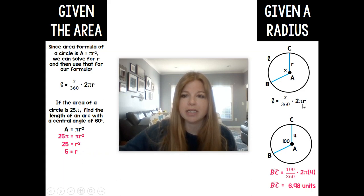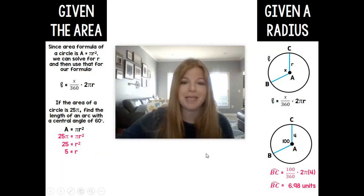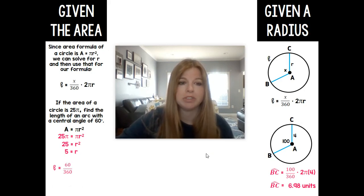Once I have my radius of 5, I can go ahead and plug it into this formula the same way I did here. I would be able to then say that the length of the arc would be equal to 60 over 360 times 2π5, my radius of 5. And if I round it to the nearest hundredth place, I should be getting 5.24 units.